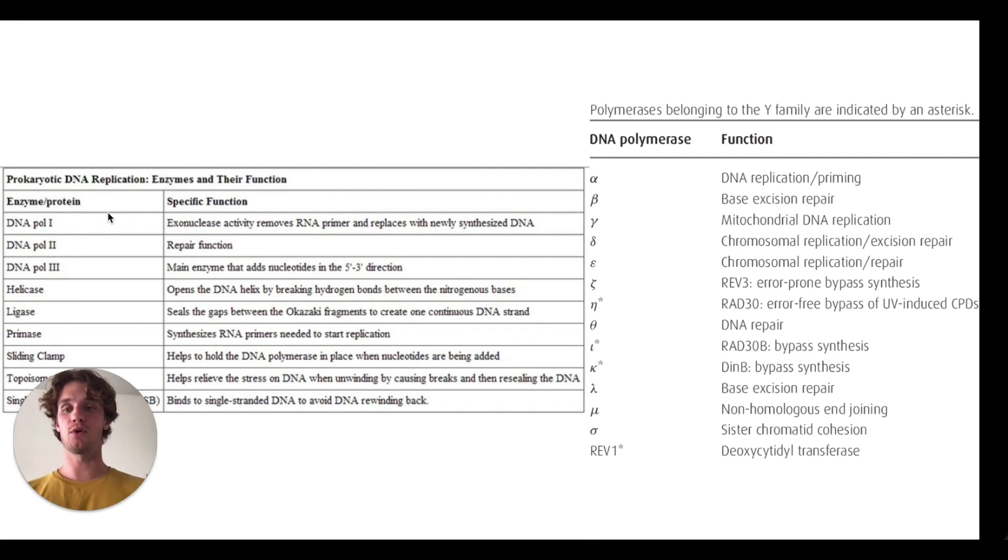but you just need to understand that prokaryotic cells have three different polymerase enzymes, whereas eukaryotic cells basically only have one.